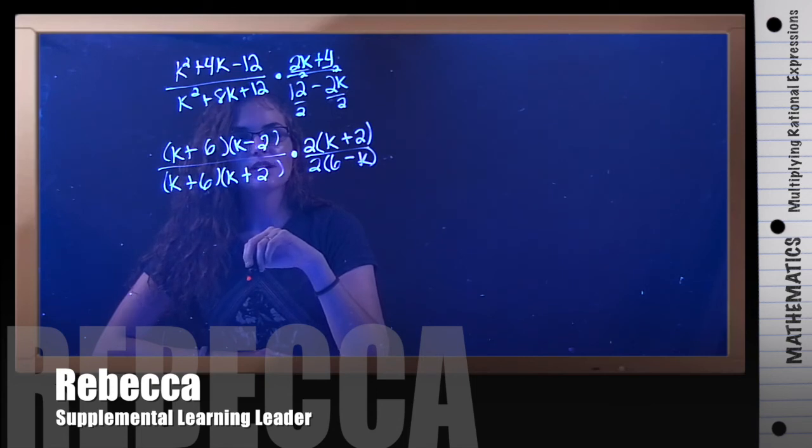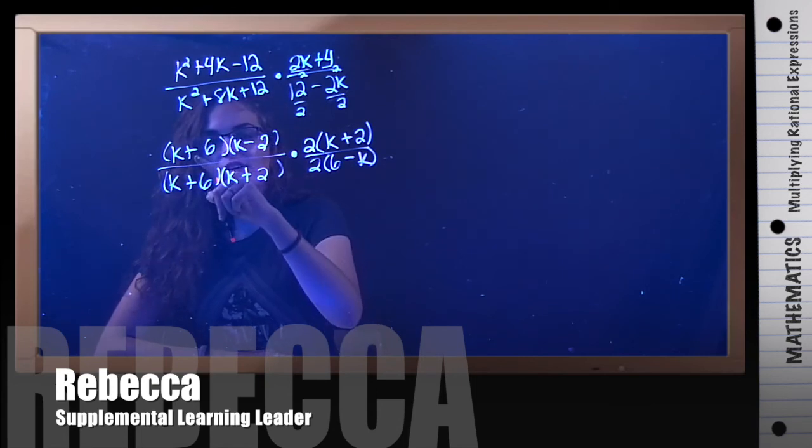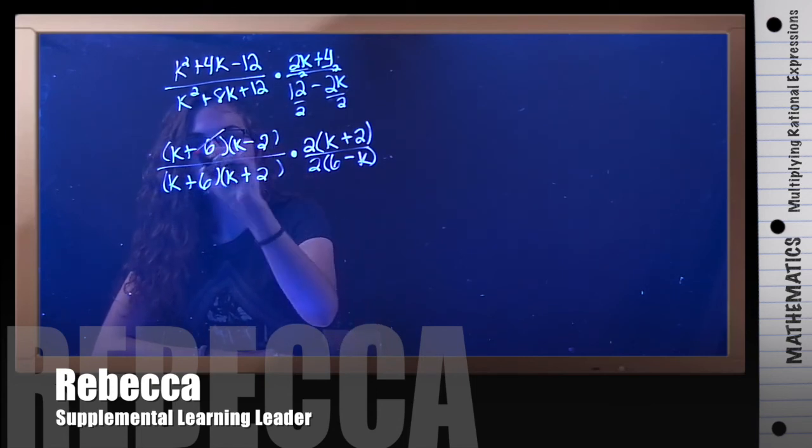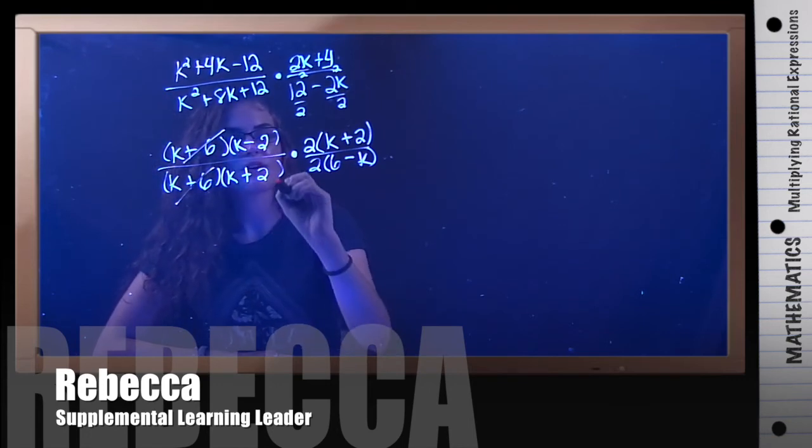Okay, now we can see if anything cancels. Well, we have a k plus 6 and a k plus 6 here. And we have a k plus 2 and a k plus 2.